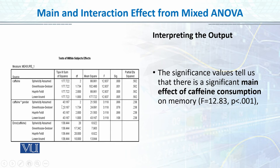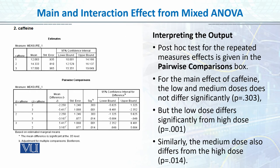Significance value tells us that there is a significant main effect of caffeine consumption। Main effect के लिए जो F की value है — this is the main effect of caffeine — उसकी value F = 12.23 आई है, p की value 0.00 है, और degrees of freedom 2 हैं। p-value 0.000 है तो हम लिखते हैं p < 0.001।